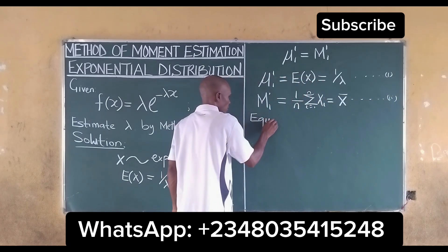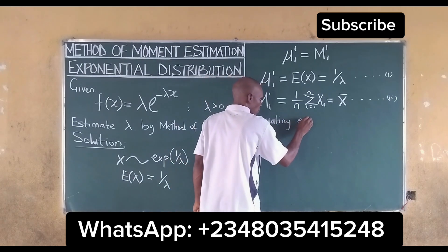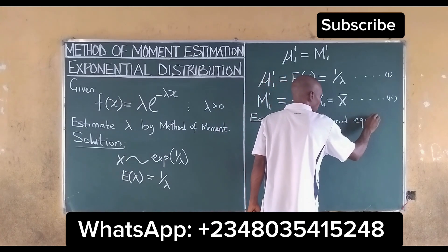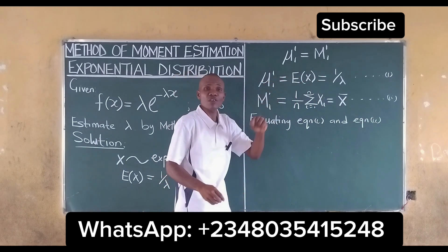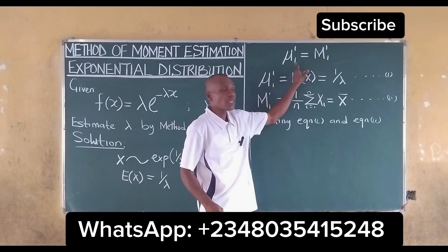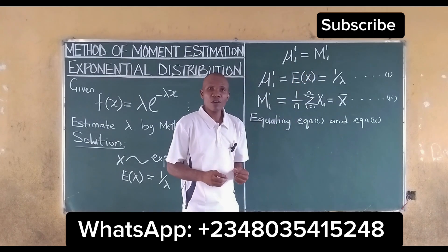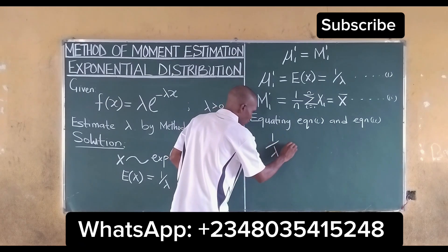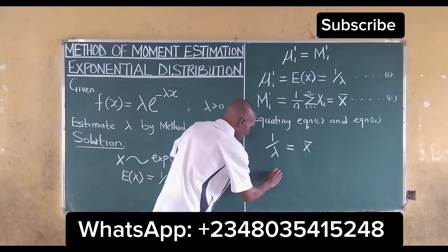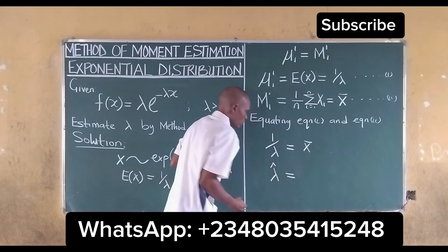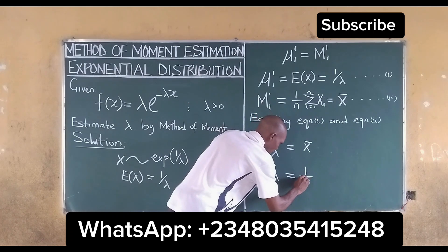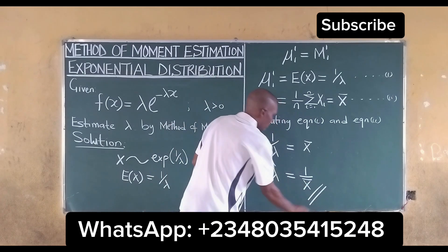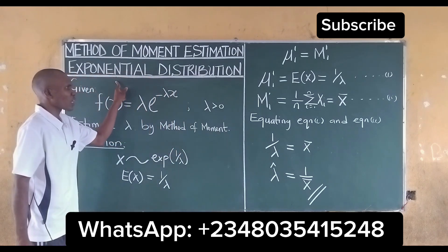Equating equations 1 and 2: because the solution to the method of moments is when the population mean equals the sample mean, we get our estimate. Equating equation 1 and equation 2, we have 1 over lambda equal to x-bar. It then means that our lambda estimate is equal to 1 over x-bar. This is how we estimate the parameter using the method of moments for an exponential distribution.